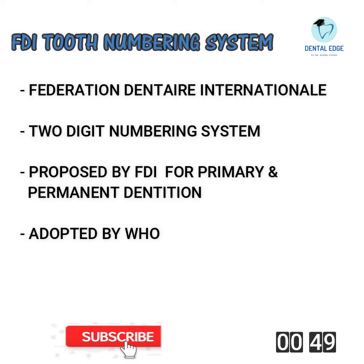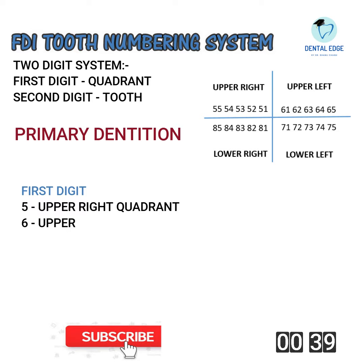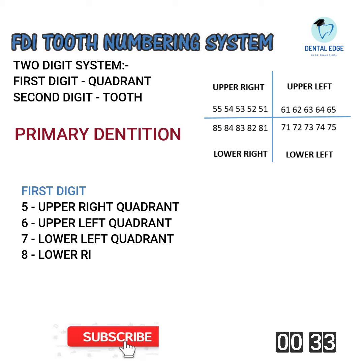Now let's see how the FDI tooth numbering system is used. The first digit indicates the quadrant. For primary dentition: five is upper right quadrant, six is upper left quadrant, seven is lower left quadrant, and eight is lower right quadrant.